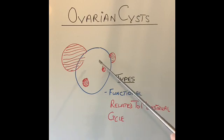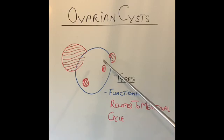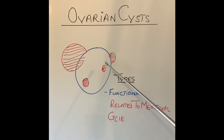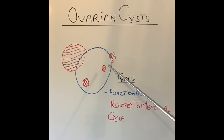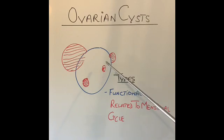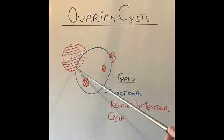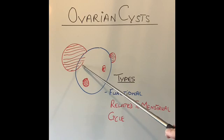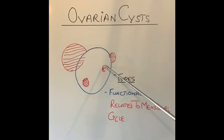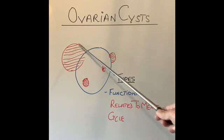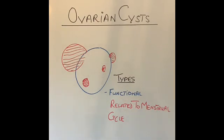These functional cysts are almost always benign and tend to settle down within a few weeks or months. The vast majority resolve without any treatment. They vary in size from less than one centimeter to several centimeters. Smaller cysts usually cause no symptoms, while larger cysts can cause symptoms.